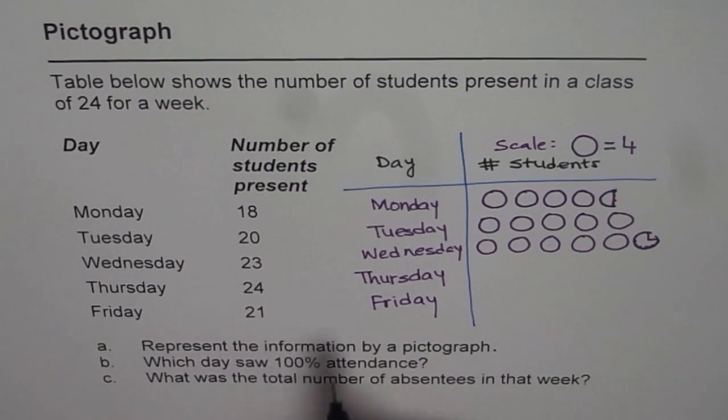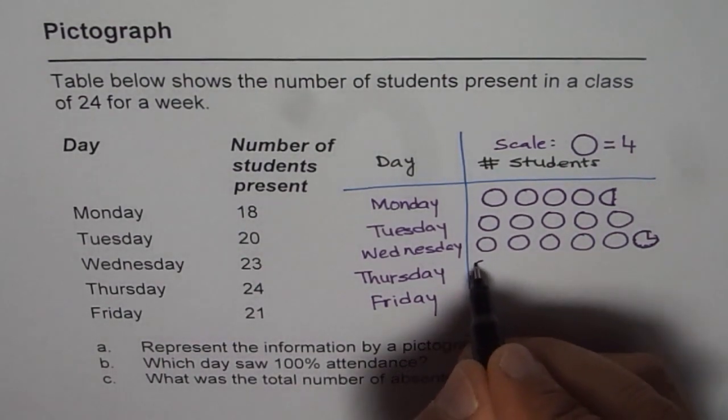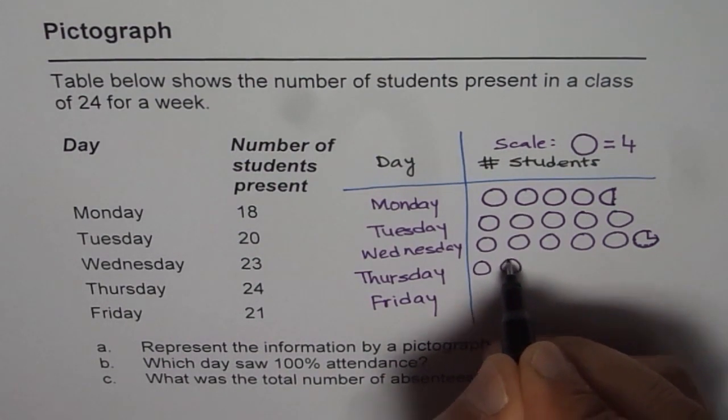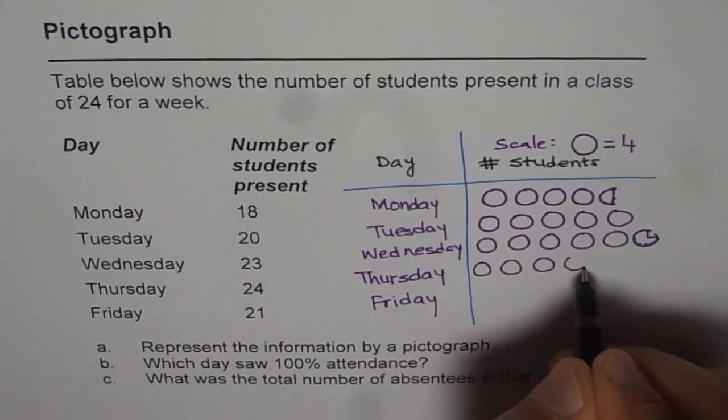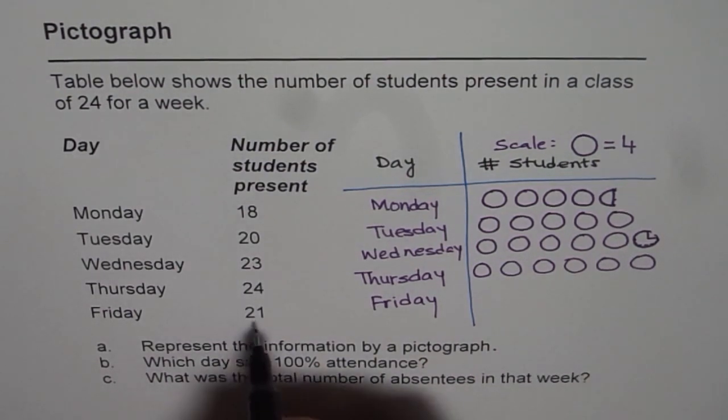24. 24 is 6 times 4. So we need to draw 6 circles: 1, 2, 3, 4, 5 and 6.